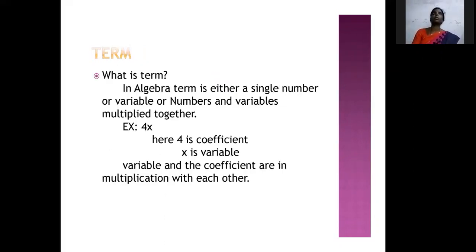Next, term. What is a term? In algebra, a term is either a single number or variable, or numbers and variables multiplied together. Example: 4x. Here, x is a variable and 4 is a coefficient. Variable and coefficient are multiplied with each other.